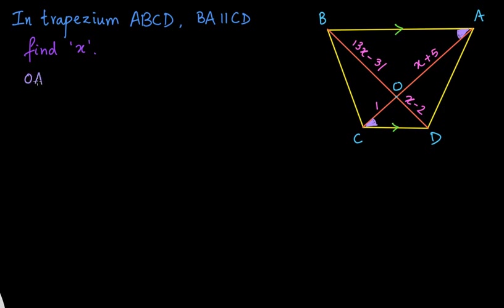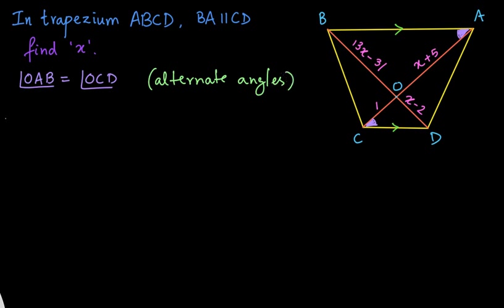So we can say that angle OAB is equal to angle OCD — the reason being they are alternate angles. And once again, in the same figure, we can also see that angle OBA is equal to angle ODC because of the same reason. So angle OBA is equal to angle ODC, and the reason will be the same: they are alternate angles.